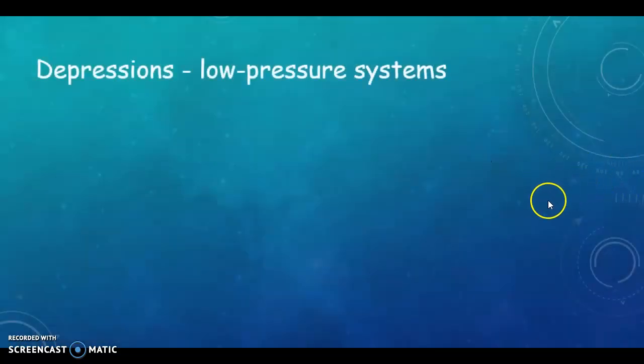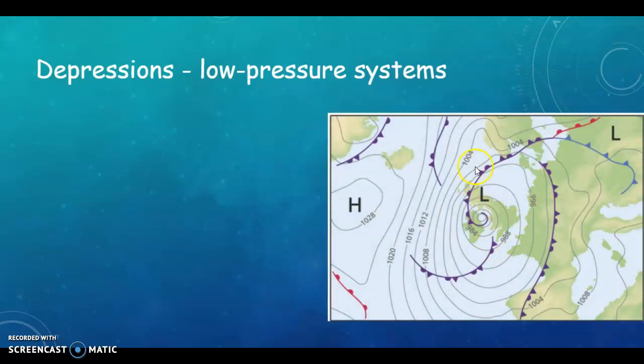Now our depressions are low pressure systems. So if somebody is depressed, you might say that they feel a little bit low. So that might be your way of remembering that a depression is your low pressure system and an anticyclone is your high pressure system. Your low pressure system is represented with an L on the map. So we have a low pressure system here with an occluded front around it. And you can see that the isobars are quite close together. So there is going to be strong winds here.